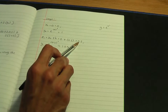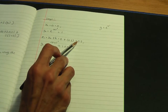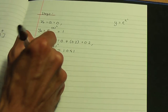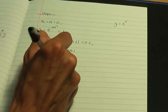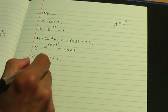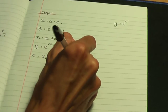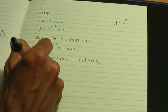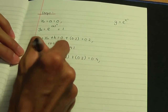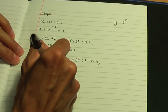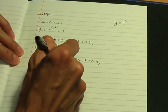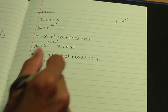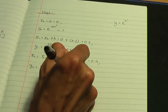We haven't reached the final x value of b, which is 0.8, so let's continue. x2 equals x1 plus h: 0.2 plus 0.2 gives 0.4. y2 equals e to the power of 0.4 squared — don't forget to square. The value of y2 is 1.174.